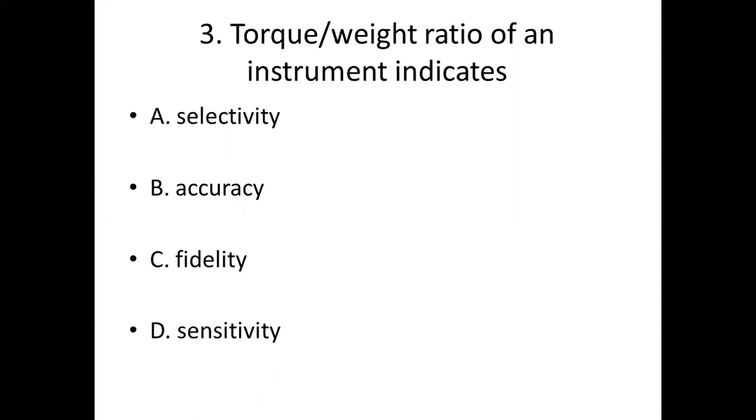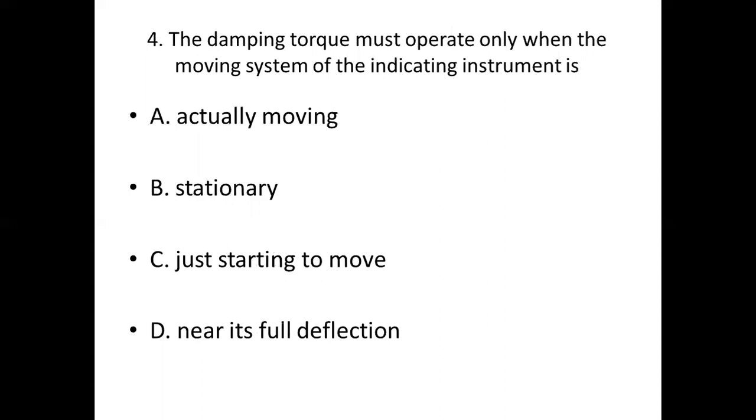Fourth bit. The damping torque must operate only when the moving system of the indicating instrument is: Option A, actually moving; Option B, stationary; Option C, just starting to move; Option D, near its full deflection. Option A, actually moving.